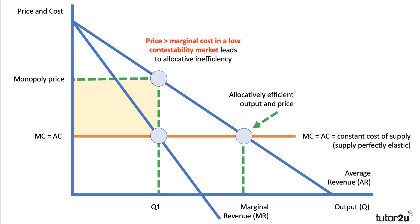This is a slightly different diagram. Here I've taken away the curvy cost curves and just assumed that there's a constant cost of supply — in other words, the marginal cost and the average cost are the same. The supply curve is drawn as perfectly elastic. The monopoly price is shown, and at that monopoly price at Q1, the profits would be the shaded yellow area. However, in a contestable market, it may well be the case that the price is driven down closer to cost. That intersection between demand and marginal cost is the allocatively efficient output and price.